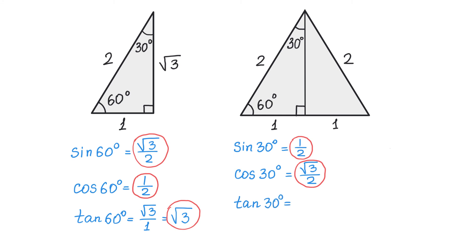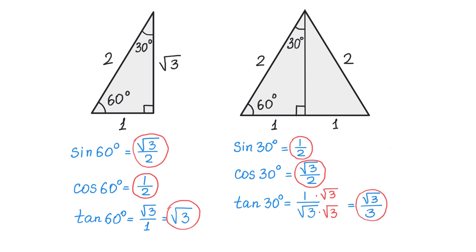Now let's find tangent of 30 degrees. By definition, tangent is the opposite side divided by the adjacent side. For this angle, this is the opposite side and this is the adjacent side. Then tangent of 30 degrees is 1 over square root of 3. Here we have to rationalize the denominator by multiplying the numerator and the denominator by square root of 3. Then we will get square root of 3 over 3. Now we have all the values of sine, cosine, and tangent of 60 and 30 degrees.